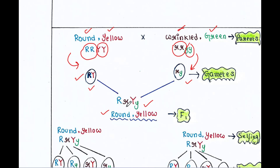The cross pollination resulted in yellow colored and round shaped seeds — capital R small r, capital Y small y — found in the F1 generation. Thus yellow color was dominant over green, and round shape was dominant over wrinkled.